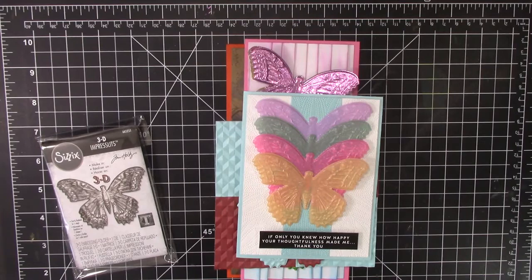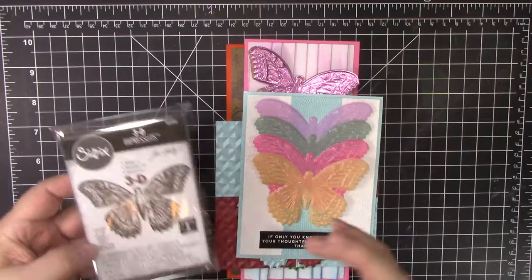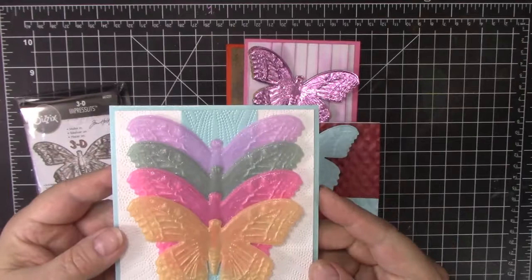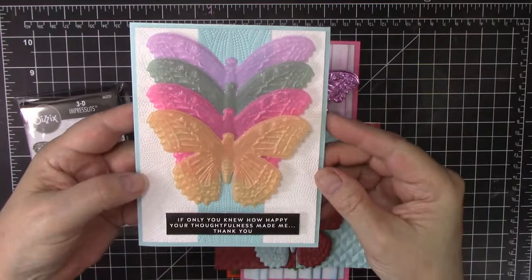This 3D Impresslets from Tim Holtz and Sizzix is an embossing folder that cuts the butterfly. Just look at the dimension on each of these butterflies. This one I made a rainbow of butterflies out of vellum, out of a sparkly colored vellum and I just love how that turned out.